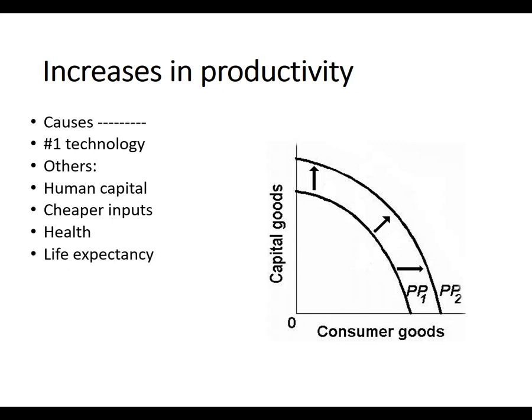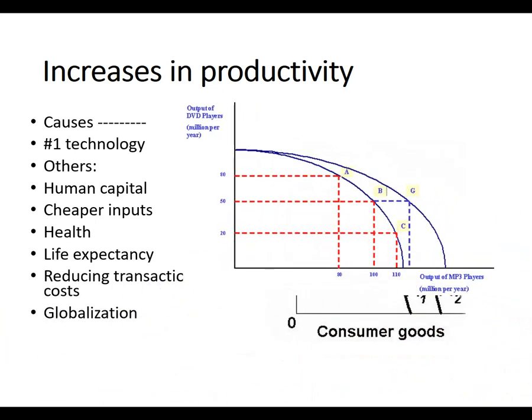As people get healthier, they're able to work more. If you're not always sick, life expectancy rises and we can work longer. Reducing transaction costs — things that get in the way of economic activity, like having to bribe someone to get a new business built — makes us more efficient and expands the production possibility frontier. Finally, globalization allows us to take advantage of all of these productivity gains.